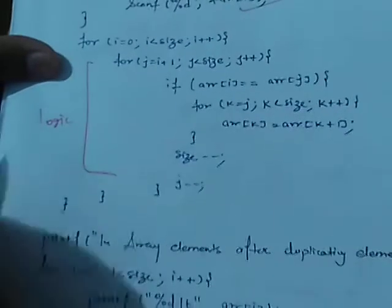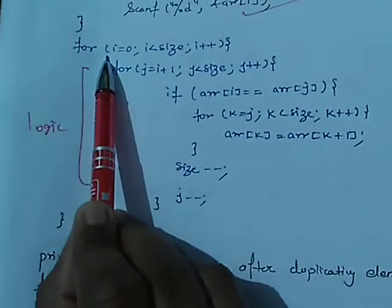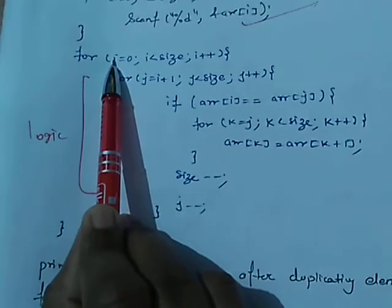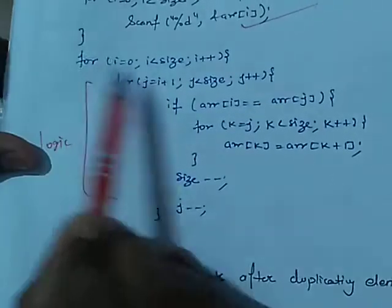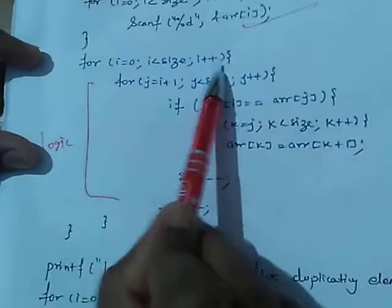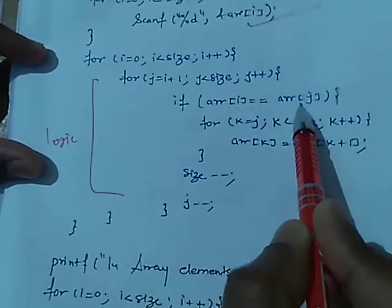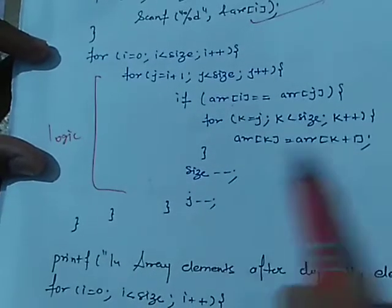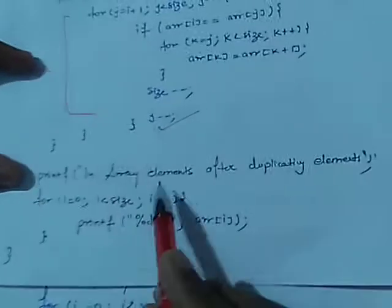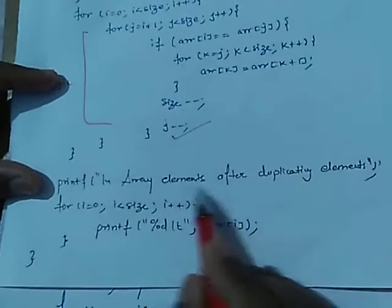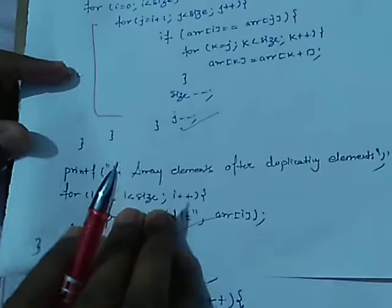This is the main logic. The outer loop selects an element one by one, and the inner loop checks for duplicacy. For i=0, i<size, i++; for j=i+1, j<size, j++. Here we compare elements — if both elements are equal, we shift the elements and decrement the size of the array. After removing duplicates, we print the resulting array. That is our first program.